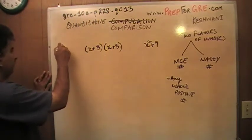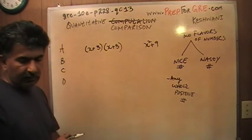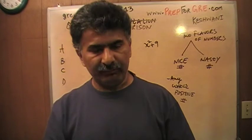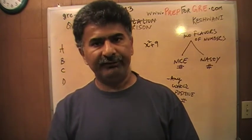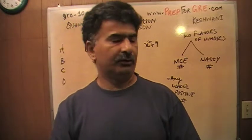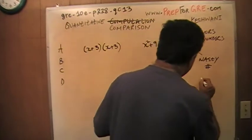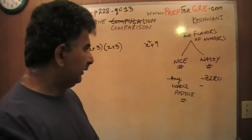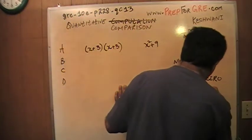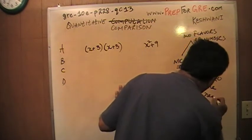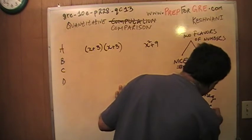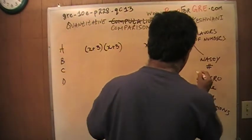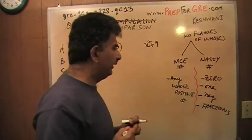Then there are nasty numbers — the nastiest of all that you always have to keep in mind. When you pick answer choices A, B, C, or D, if you pick A you're claiming that the quantity in column A is always bigger, and you have to cover your bases and think of all the weird scenarios. The nastiest of all is zero. Always cover zero. The next nastiest is one. Then you have negatives and fractions. Keep this simple thing in mind and you'll be fine.